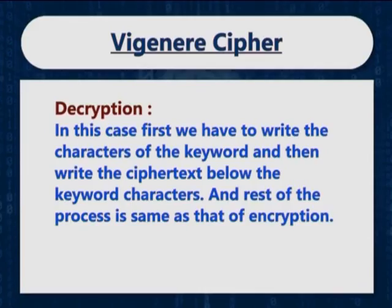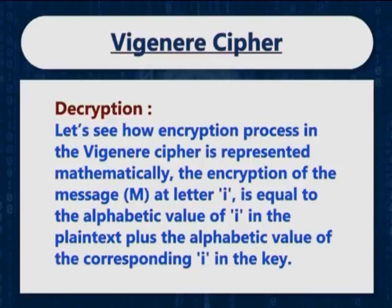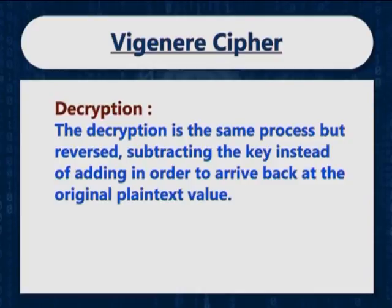The decryption of ciphertext using Wigney cipher follows the same procedure. In this case, first we have to write the characters of the keyword and then write the ciphertext below the keyword characters, and the rest of the process is the same as encryption. The encryption of the message M at letter i is equal to the alphabetic value of i in the plaintext plus the alphabetic value of the corresponding i in the key. The decryption is the same process but reversed, subtracting the key instead of adding in order to arrive back at the original plaintext value. The Wigney cipher was an improvement upon previous historical encryption techniques but is still vulnerable to brute force attacks and frequency analysis, though to a lesser degree than the Caesar cipher.